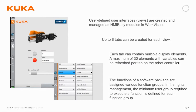This is called a view, and each view can then have up to eight under-pictures or tabs, as they are called. We will see that very shortly in a real-life example. Each tab or under-screen itself can then be built up of a maximum of 30 picture elements. A picture element could be a graphical object, an input field, a slider, and so on.